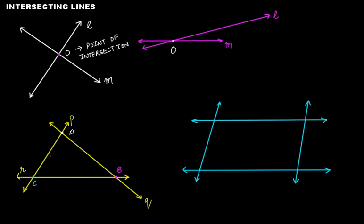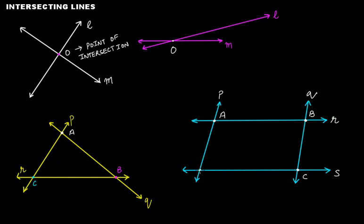Similarly, in this figure we have four lines: P, Q, R, and S. Lines R and P intersect at point A. Lines R and Q intersect at point B. Lines S and Q intersect at point C. Lines S and P intersect at point D. So in this case we have four different points of intersection for four different pairs of lines.